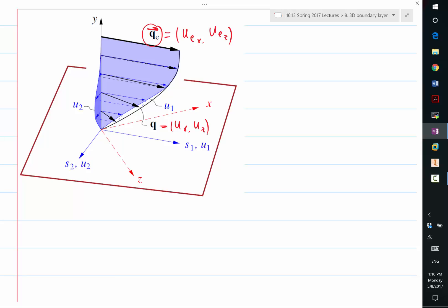The reason is that this UX, UZ have different scales than the V. Remember our thin layer assumption?